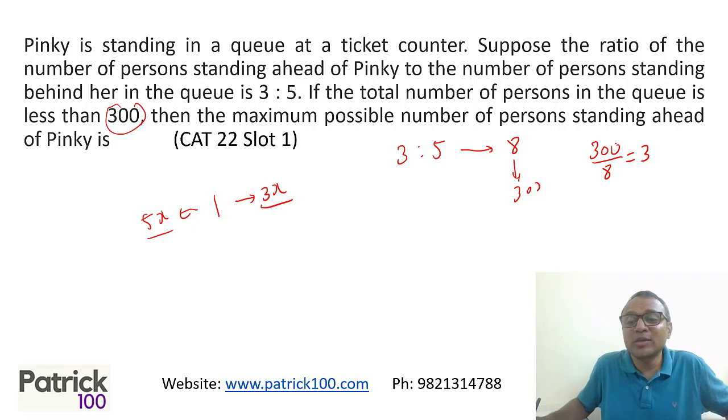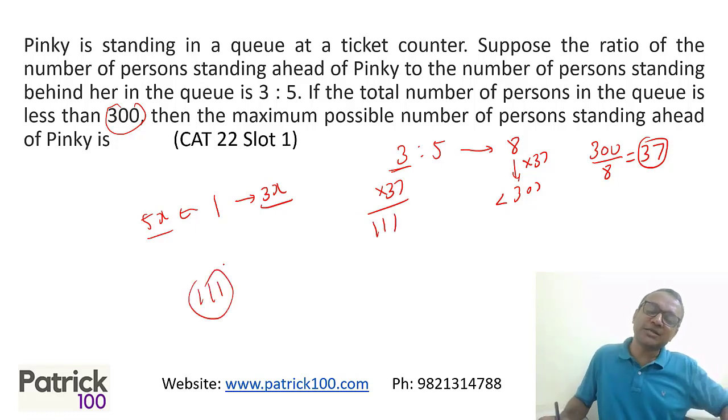Check out. Just divide 300, divide by 8. 8, 3 is 24. 60, 8, 7 is 56. 37 times. Maximum possible. Moment you do 38, it becomes more than 300. So 8 into 37 will be less than 300. Which means how many people are standing ahead of Pinky? 3 into 37, 111. That's the answer. Cross multiplication. Simple as that.